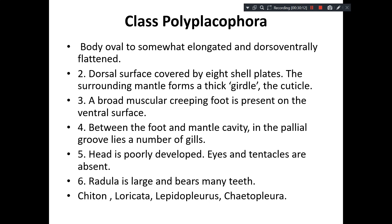The dorsal surface is covered by eight shell plates. The surrounding mantle forms a girdle made out of cuticle. They have a broad muscular foot used for movement on the ventral surface. Between the foot and the mantle cavity lie a number of gills, because respiration is through gills or the general body surface.